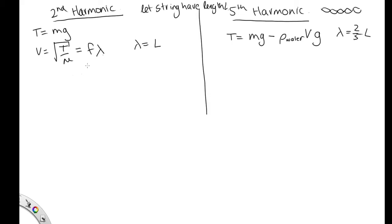Now for each of our cases, we can substitute into this equation here. So tension, we've got mg over mu is equal to fL. And in this case, our tension is mg minus rho vg over mu. And this, in this case, is equal to f lambda, where lambda is 2 fifths L times f.